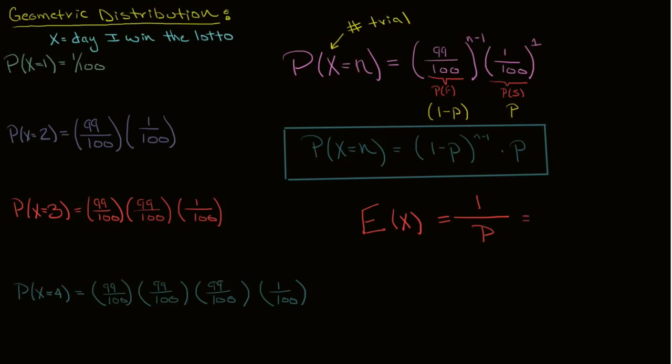So to get the expected value of x, you get 1 over p, or p to the minus 1, which is just flipping the probability of success.